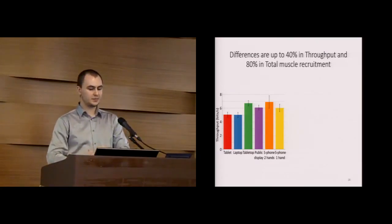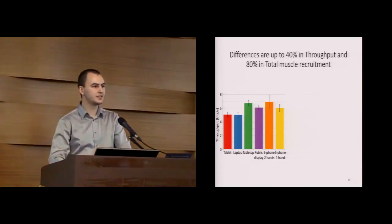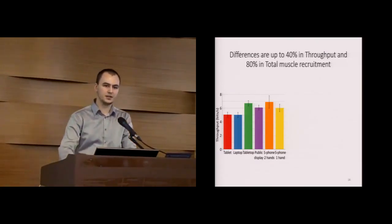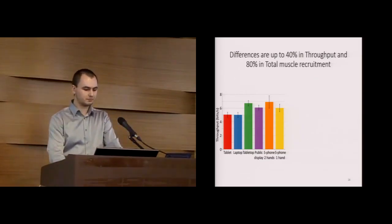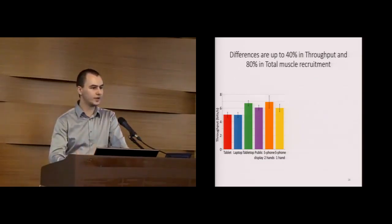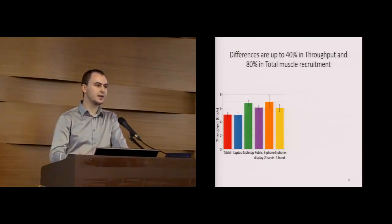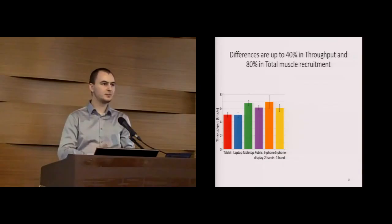First we find up to 40% differences in Fitts-based throughput. The best is a smartphone with two hands interaction and tabletop, and the lowest throughput is with tablet and laptop.